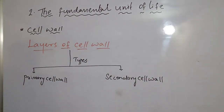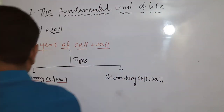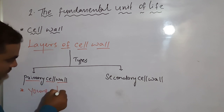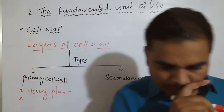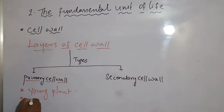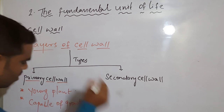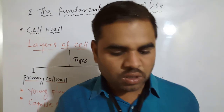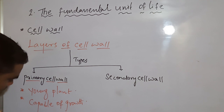Let us look at the first one - the primary cell wall. The primary cell wall is the cell wall of a young plant cell; it is present only in young plant cells. It is capable of growth.